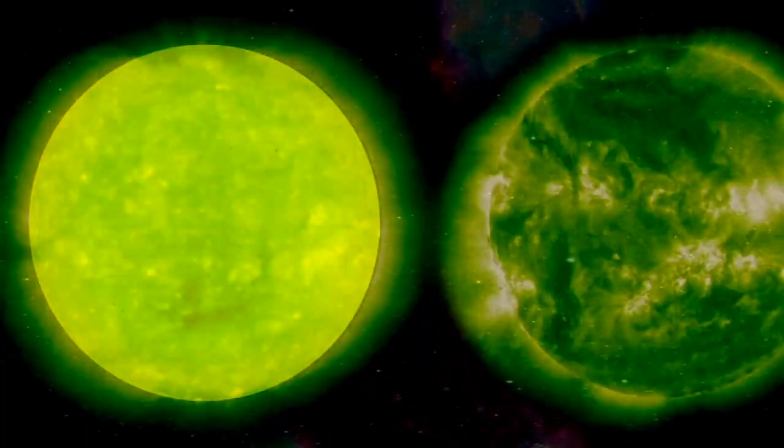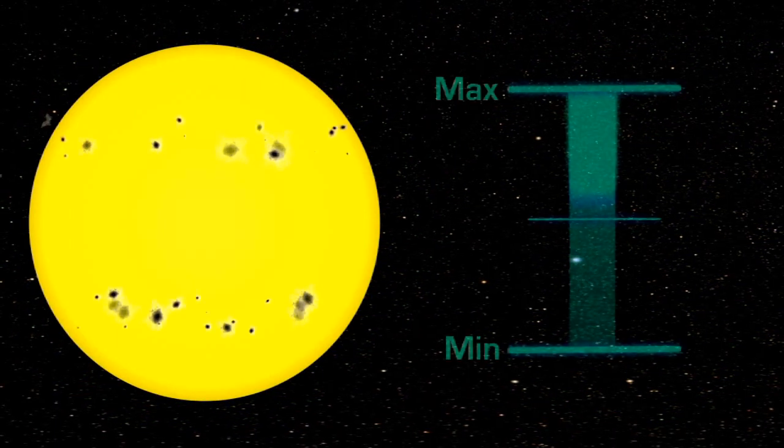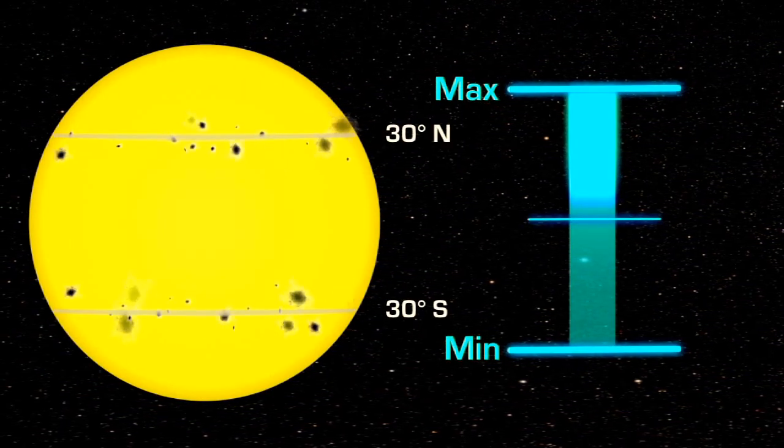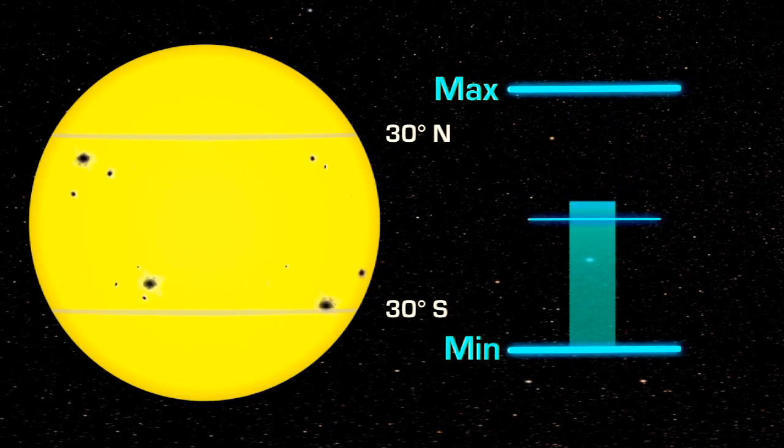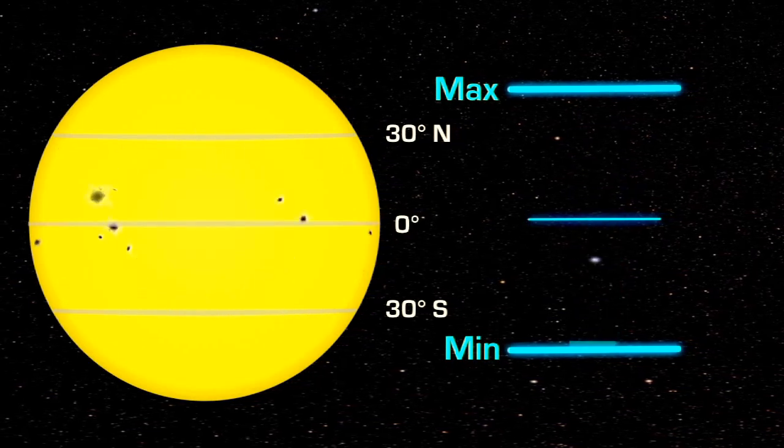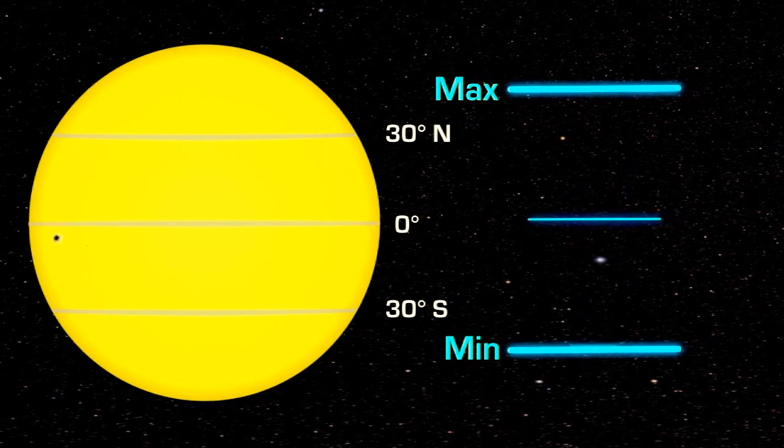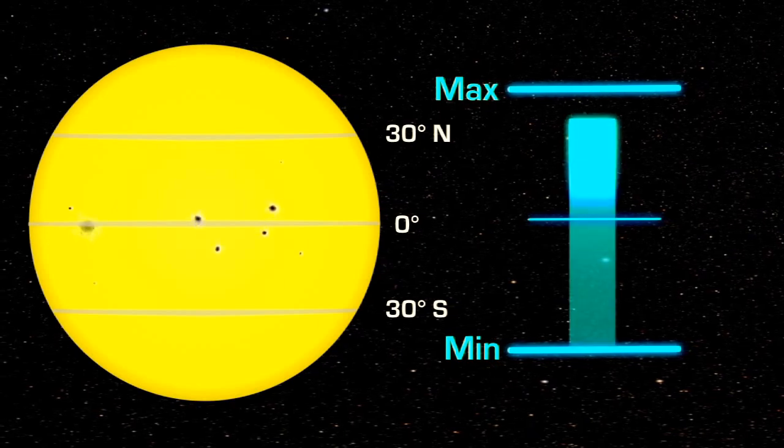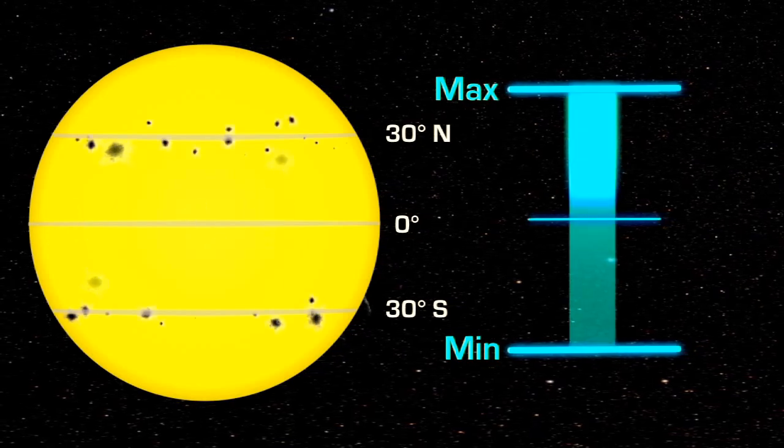During this cycle, the location of the sunspots also changes. They are at middle latitudes during solar maximum and move closer to the equator as the Sun approaches solar minimum. At solar minimum, there are sometimes no sunspots to observe. At solar maximum, there can be many at the same time.